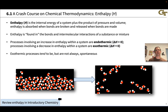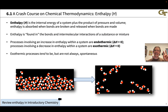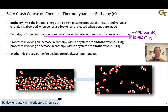Let's start with the first law of thermodynamics and an important concept that comes out of it: enthalpy. Enthalpy is equal to the internal energy of a chemical system plus the product of its pressure and volume. For organic chemistry, it's most helpful to think about enthalpy as being in the bonds and intermolecular forces of a substance or mixture — when we make or break a bond, enthalpy changes. The more bonds we have, the lower the enthalpy of the system; the fewer bonds we have, the higher the enthalpy.